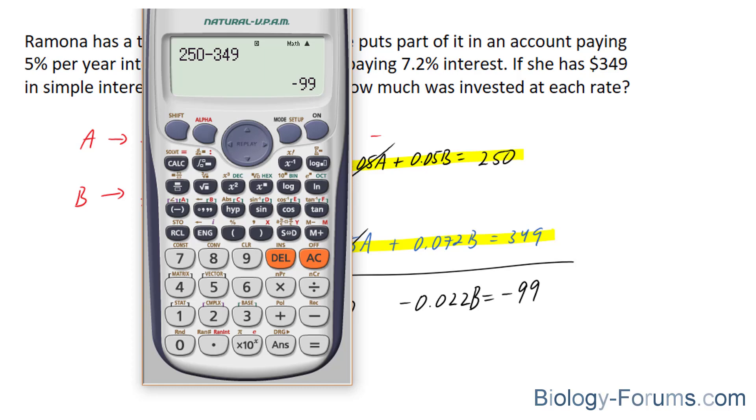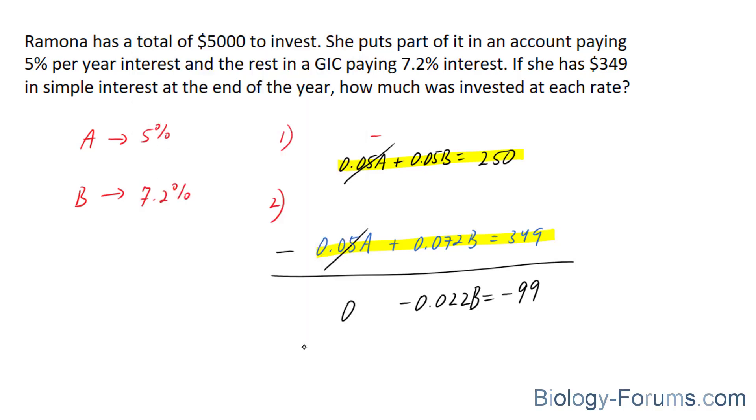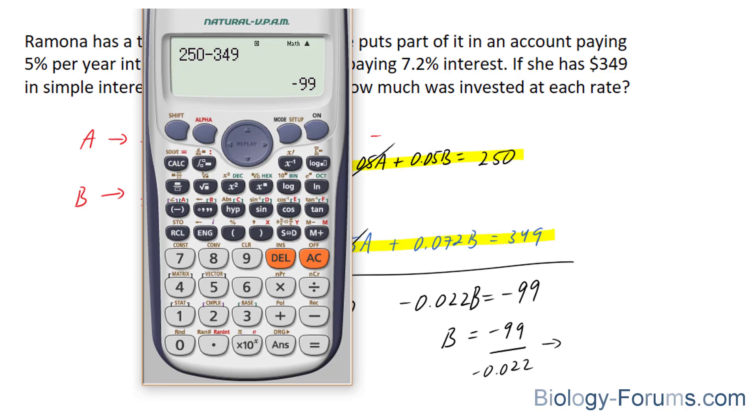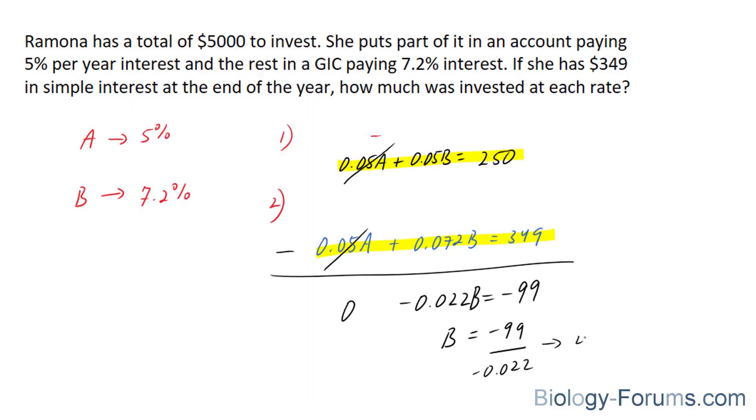Now, just to double check, 250 minus 349 is equal to negative 99. That being said, we can now solve for B by dividing both sides by negative 0.022. And our answer for B is equal to 4,500.